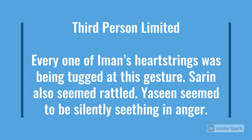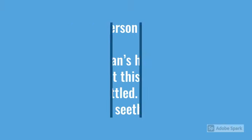Sarin is said to seem rattled. In the earlier excerpt, it was written that she had a knot in her stomach, but of course Iman cannot have such an exact sense of what another person is feeling. More obviously, Iman does not know that Yasin was frozen in fear, which was mentioned in the omniscient point of view. Instead, he just assumes that Yasin is angry.